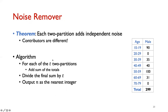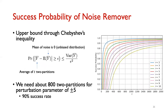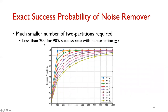With this observation, the algorithm is simple: for each of T two-partitions, sum the totals, divide by T, and output the nearest integer as the true count. For the success probability, we show an upper bound using Chebyshev's inequality, which relates the error in finding the true answer to the accumulated variance of the totals. This bound requires about 802 partitions to find a perturbation parameter of plus or minus five. However, the exact success probability is much better — only about 200 queries are needed for a 90% success rate.